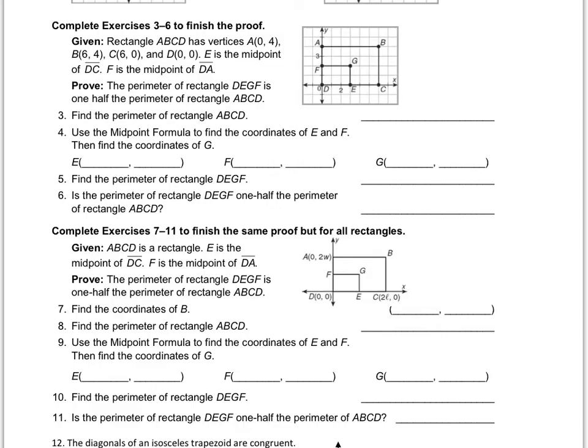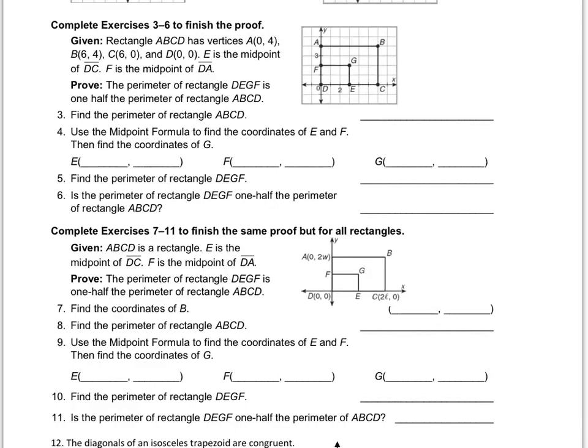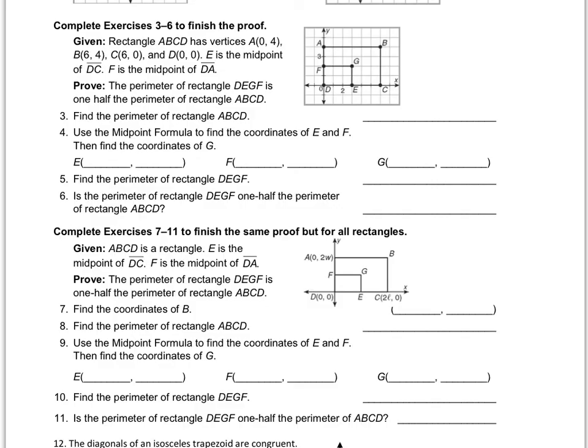First, we have to find the perimeter of rectangle ABCD. Well, the perimeter of rectangle A, B, C, and D, we know that this is going to be a length of 6, and this will be a length of 4 just based on the coordinates that they gave us, right? Because B is at 6 comma 4. So this perimeter is going to be 20. 6 plus 4 plus 6 plus 4. So the perimeter of ABCD equals 20.